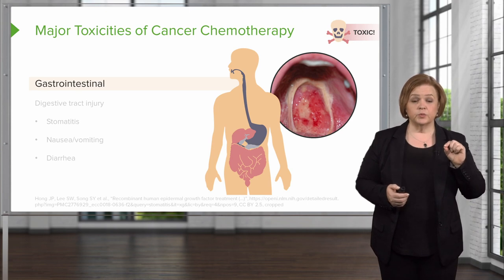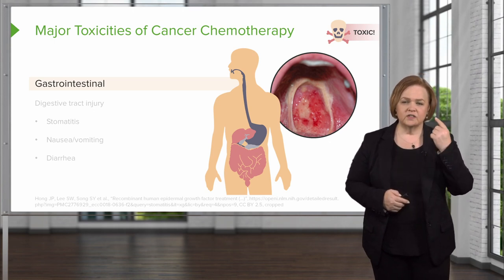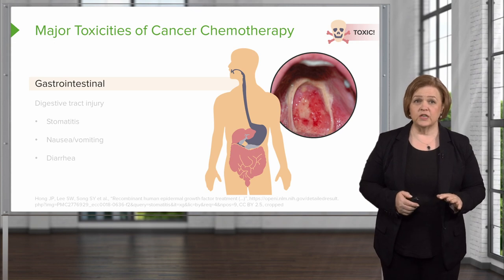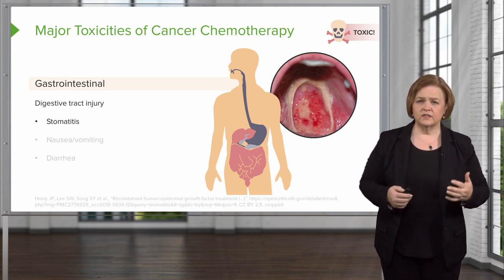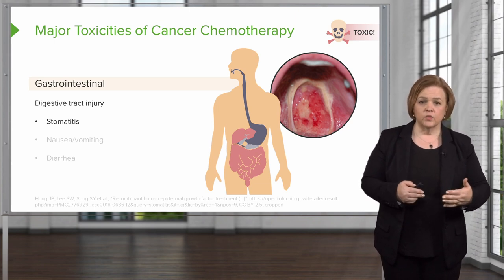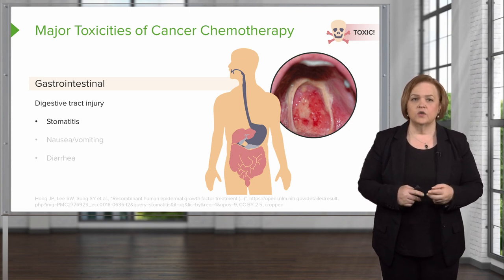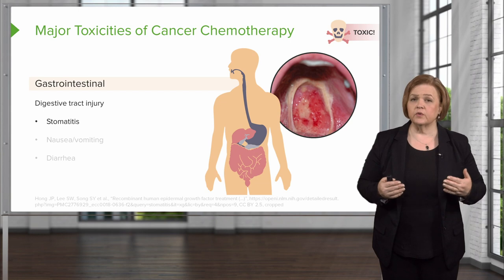GI is going to be a large percentage of what you see in patients who are on chemotherapy. What you see on your screen is a picture of stomatitis — horribly intense mouth sores. When we talk about GI effects, it's digestive tract injury because those are high growth fraction cells. This is excruciating. So how much do you see this on a test? Well, if we know a patient's on chemotherapy, we know that all of these areas are at risk.